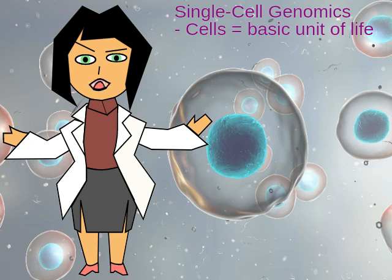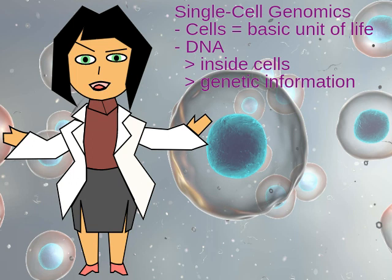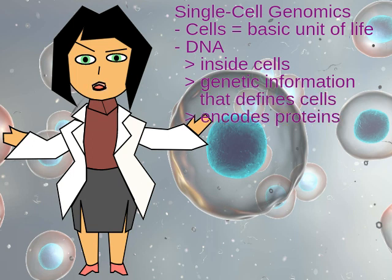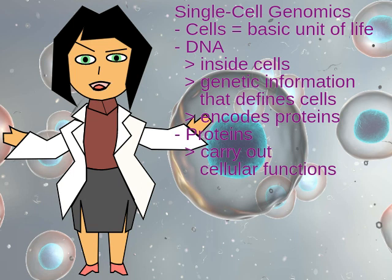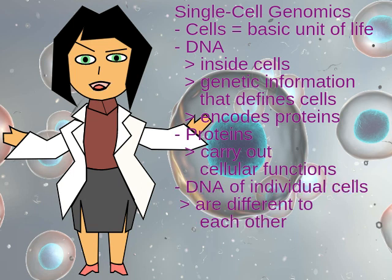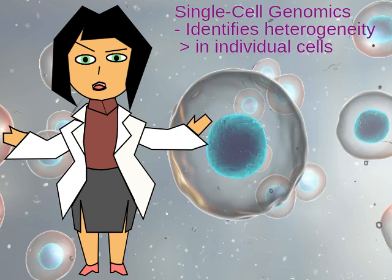Cells are the basic unit of life. DNA is stored in cells — it is the genetic information that defines cells and encodes the proteins that carry out cellular functions. The DNA of individual cells differs from that of mixed cell populations. Single-Cell Genomics identifies the heterogeneity present in individual cells.